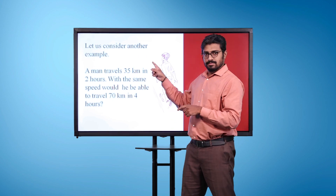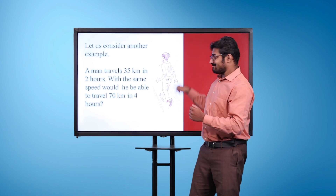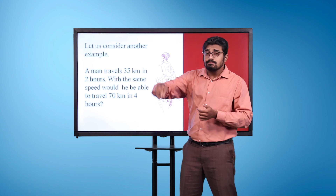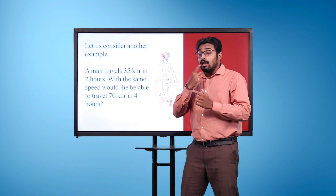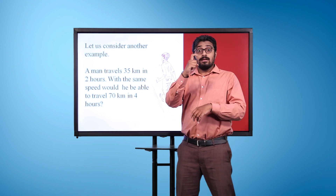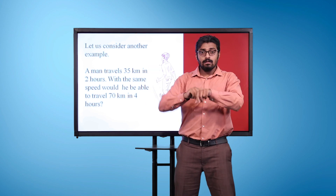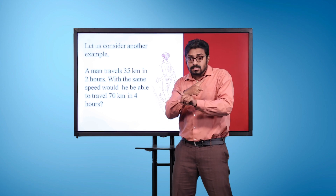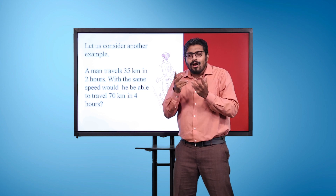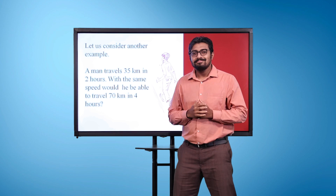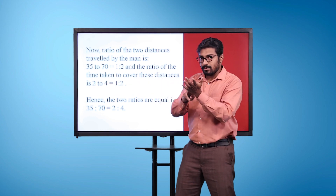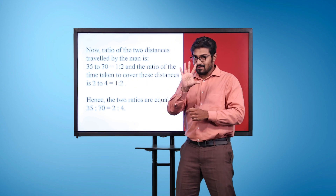Let us consider another example. A man travels 35 kilometers in 2 hours. With the same speed, would he be able to travel 70 kilometers in 4 hours? Now, ratio of the two distances traveled by the man is 35 to 70, which is equal to 1 is to 2.